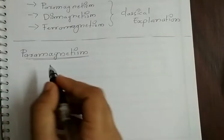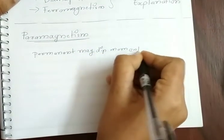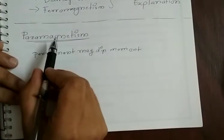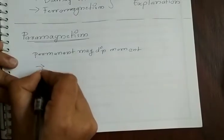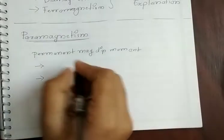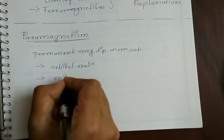Materials that exhibit paramagnetism are known as paramagnetic materials. The materials that have a permanent magnetic dipole moment associated with them show paramagnetic behavior. This paramagnetic behavior can be due to two important reasons: it can be due to the orbital motion of the electron, or it can be due to the spin motion of the electron.